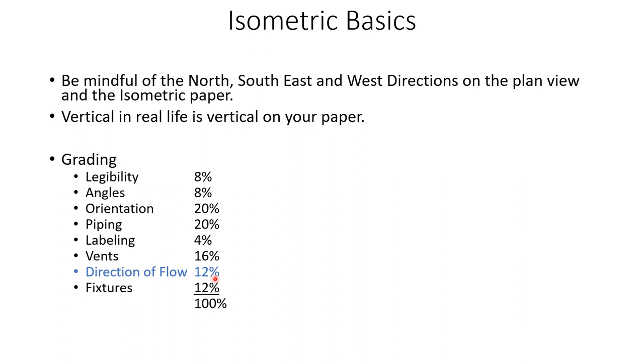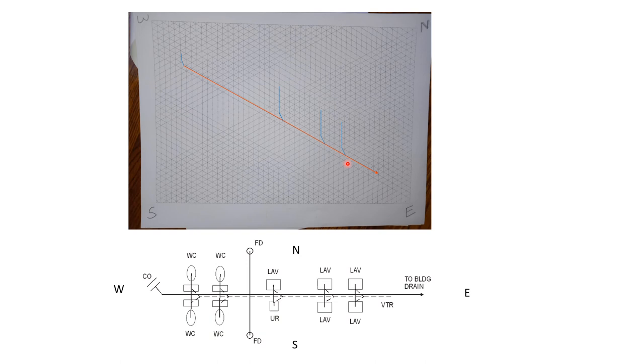So we're going to show direction of flow. This is a big one right here, it's 12%. It's easy to do, but it's also easy to forget. Now here you go, you've got a vertical line and you have a horizontal line. So you have to show direction of flow. Now if you read those instructions, it'll tell you that you need to show direction of flow from vertical to horizontal. You don't have to show it any other time.